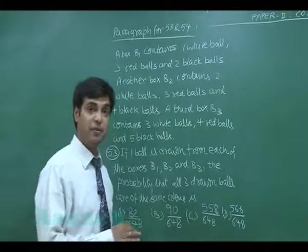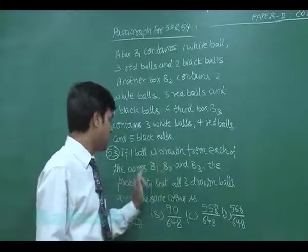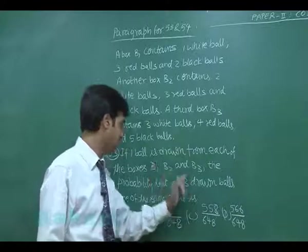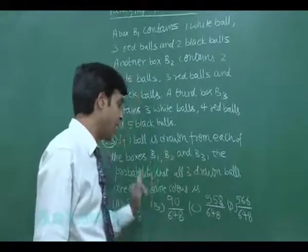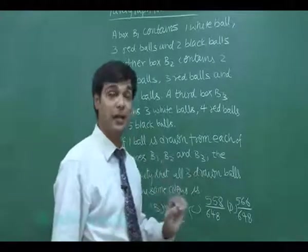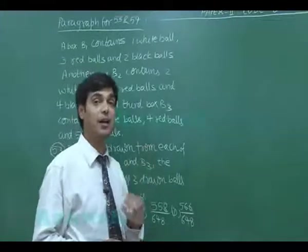Let us talk about the first question, that is 53rd first. If one ball is drawn from each of the three boxes B1, B2 and B3, the probability that all three drawn balls are of same color is, the probability that all drawn balls are of same color.